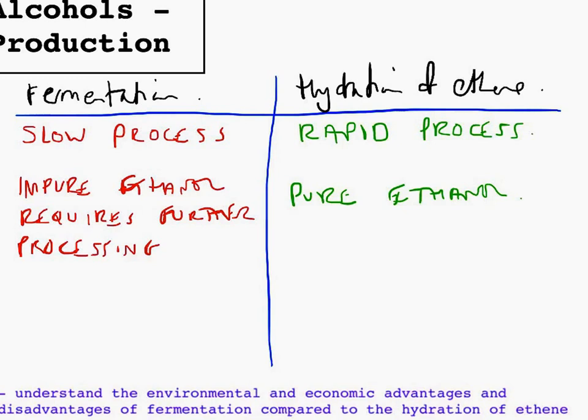Fermentation produces a very low yield because the yeast is killed when you get about 15% to 20% ethanol, whereas hydration of ethene will produce a very high yield.